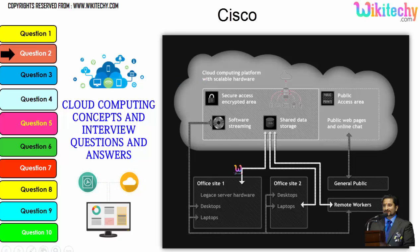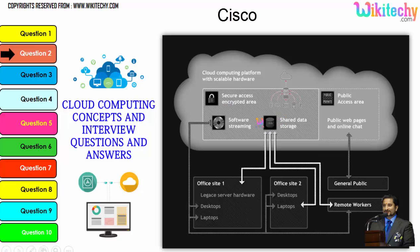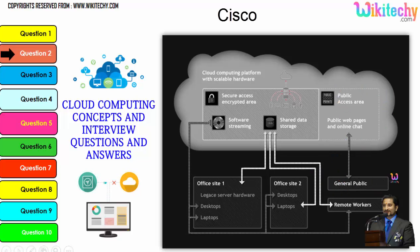Cloud computing provides a public access area with public web pages for end users, along with secure data access, shared data storage, and software streaming. Companies can use it as a private setup, and the public can use it to access web pages or websites. That's how cloud computing works.